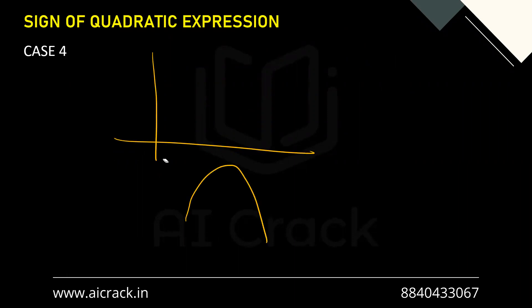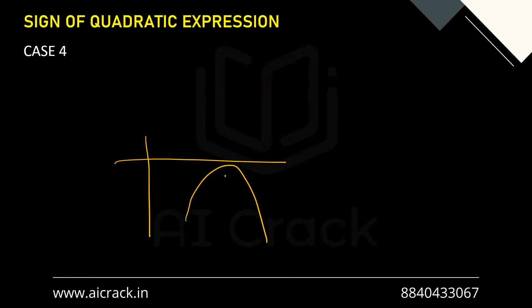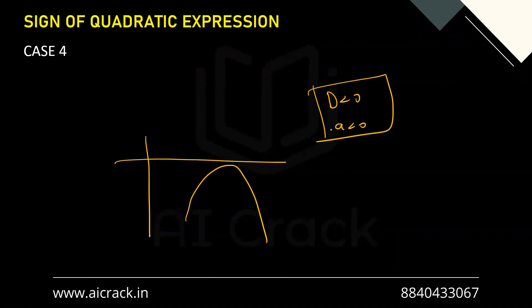The fourth case is the exact opposite: the parabola is always negative, it faces downward and has no real roots. So D < 0 and a < 0. These are the two conditions for this kind of parabola — it is always negative.